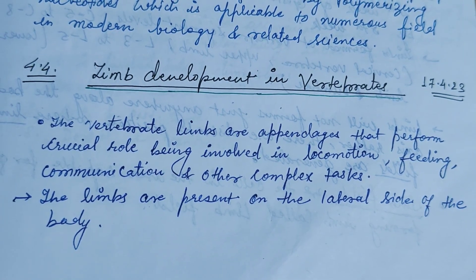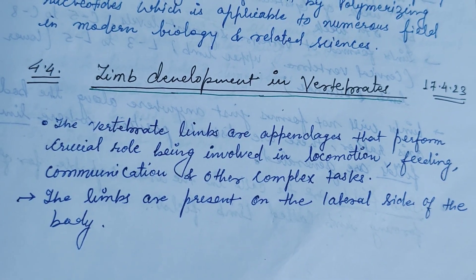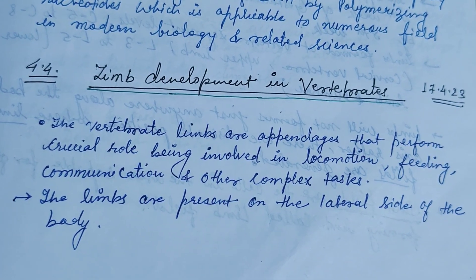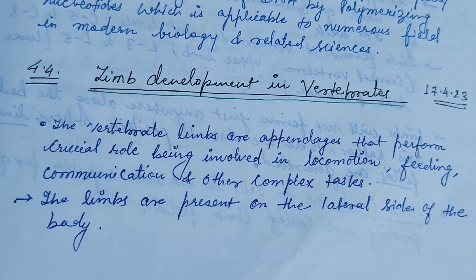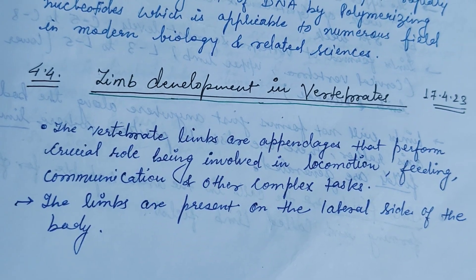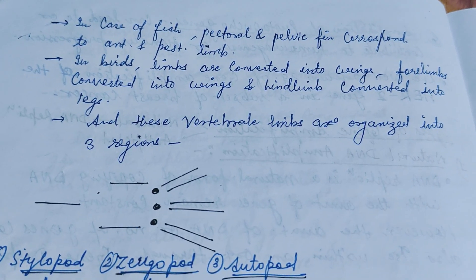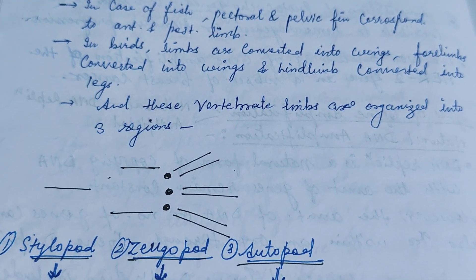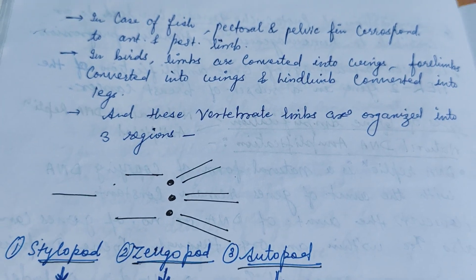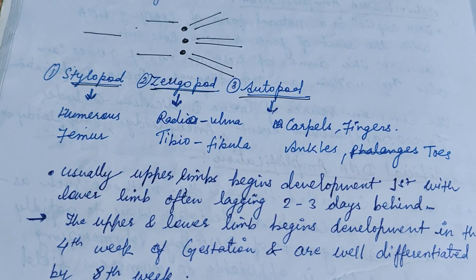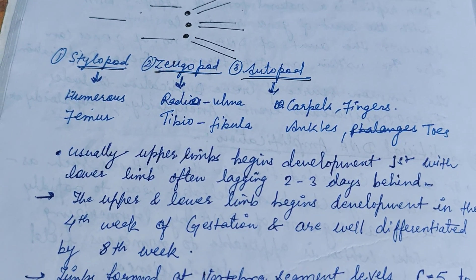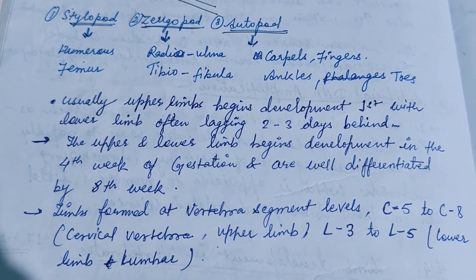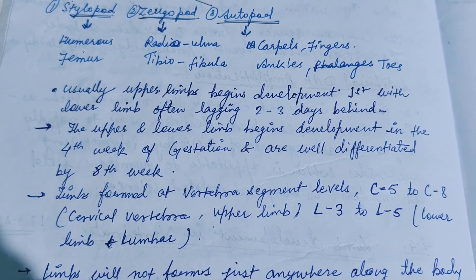Through this video we'll discuss limb development in vertebrates. Vertebrate limbs are appendages that perform crucial roles being involved in locomotion, feeding, communication, and other complex tasks. The vertebrate limbs are organized into three regions: the stylopode, zeugopode, and autopode. The stylopode forms the humerus and femur, while the zeugopode forms the radius-tibiofibula, and the autopode forms the carpals and fingers.